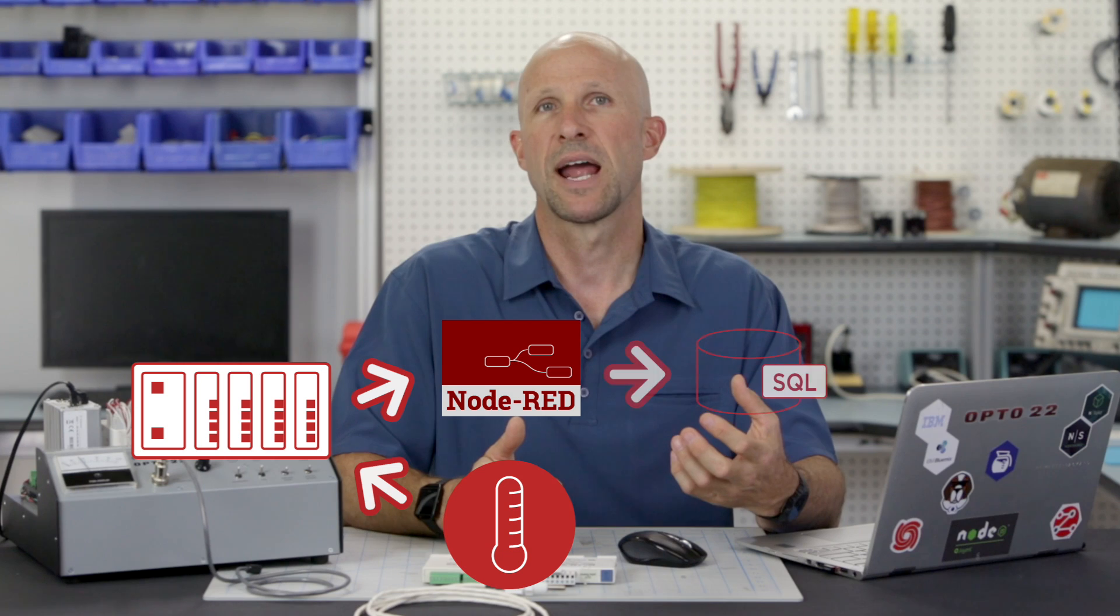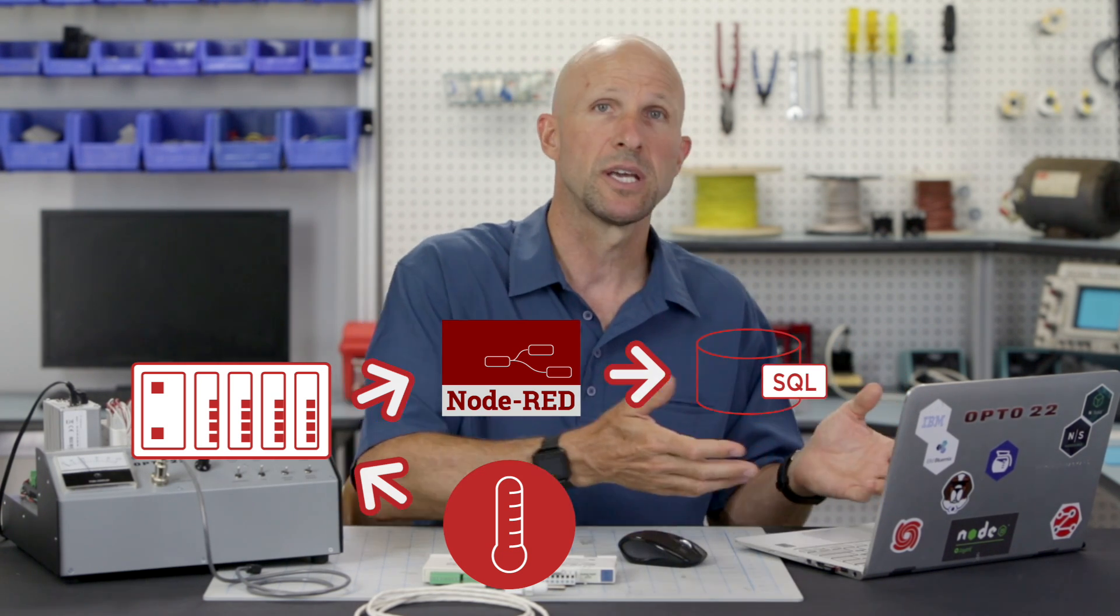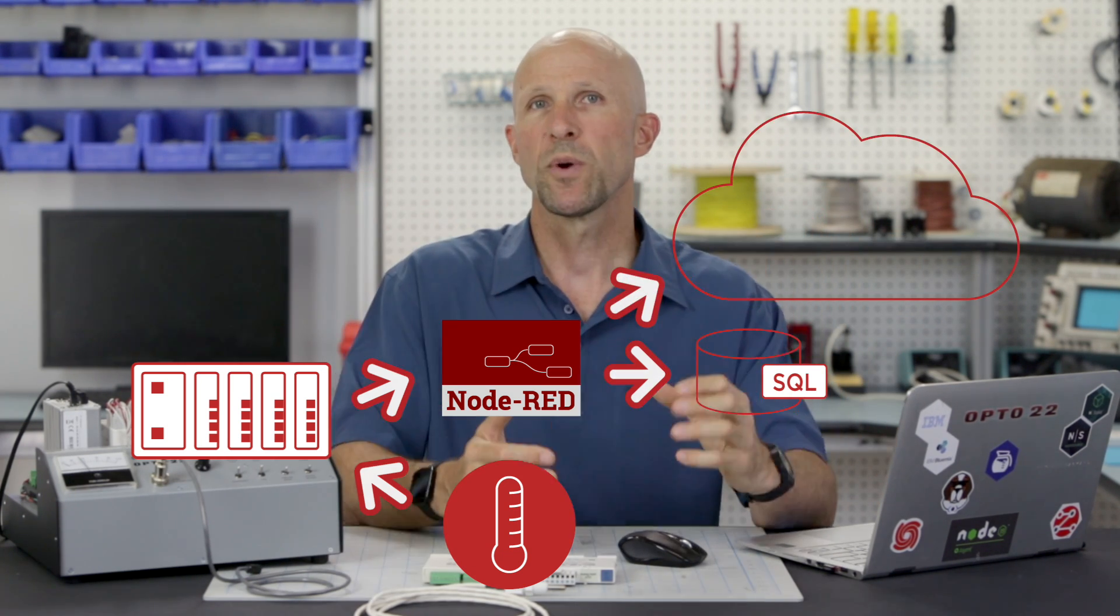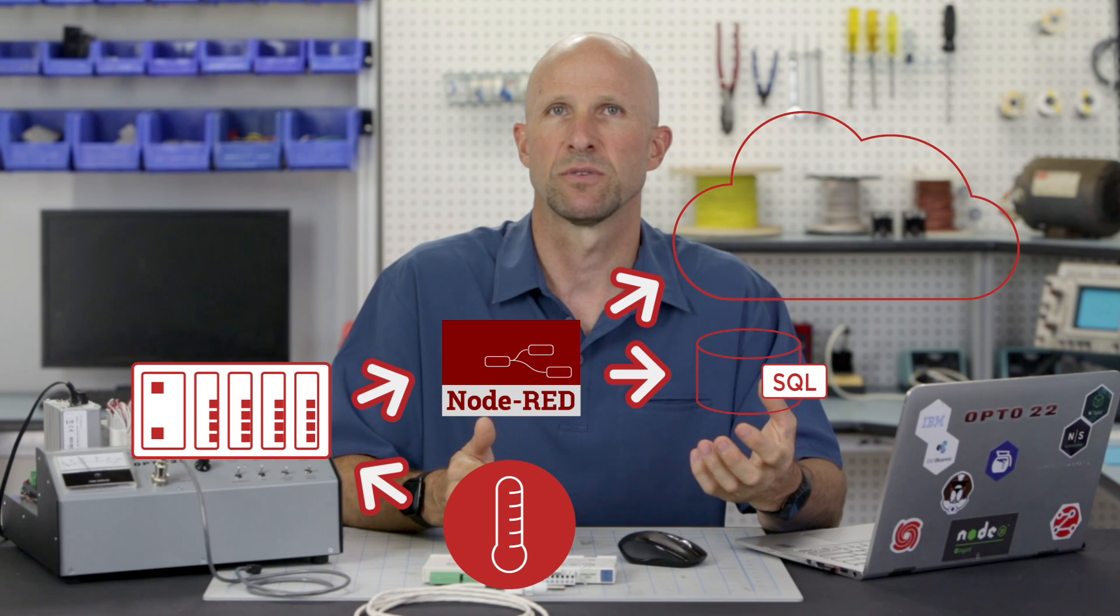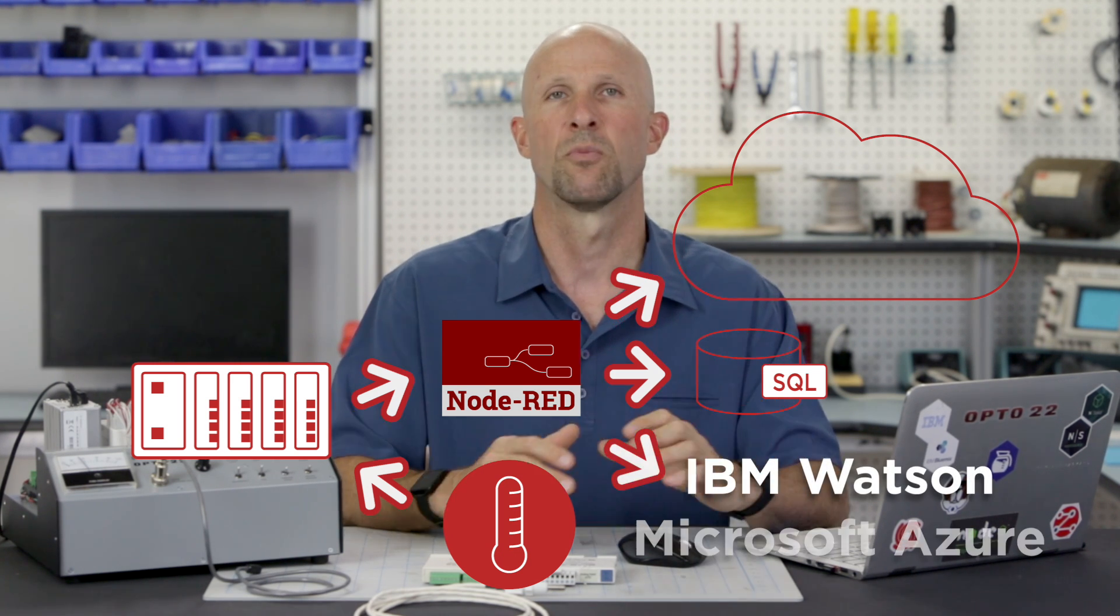Now at this point we can use PAC control to monitor the temperature value and sound an alarm if it goes out of limits, or we could just log the temperature in the controller. Using a tool like Node-RED, we could write that value to a database either locally or in the cloud, or we could send it to any number of cloud services like IBM Watson or Microsoft Azure.